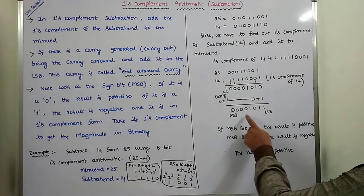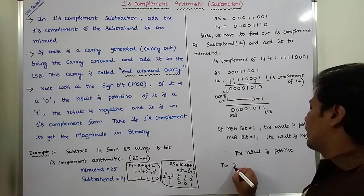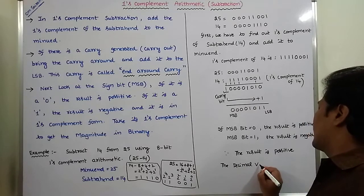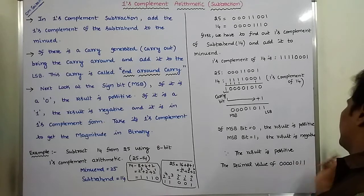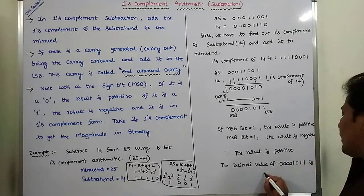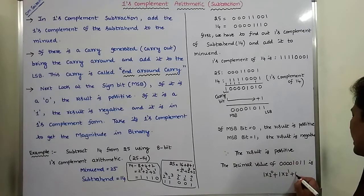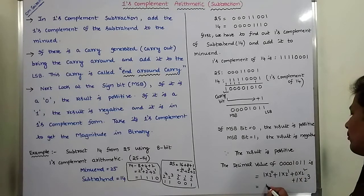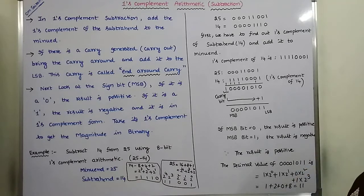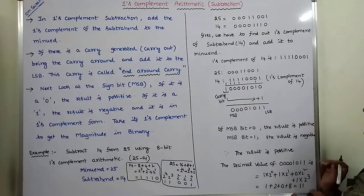Observing the MSB bit here: MSB bit is equal to 0. Therefore, the result is positive. The decimal value of 0, 0, 0, 0, 1, 0, 1, 1 is: 1 into 2 power 0 plus 1 into 2 power 1 plus 0 into 2 power 2 plus 1 into 2 power 3, which equals 1 plus 2 plus 0 plus 8 = 11. So 11 is the answer. 25 minus 14 equals 11.